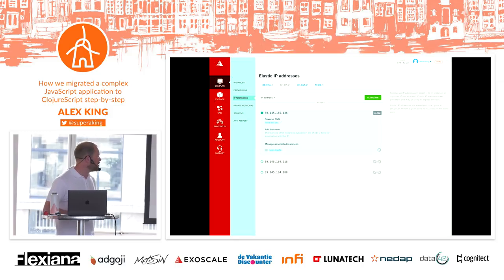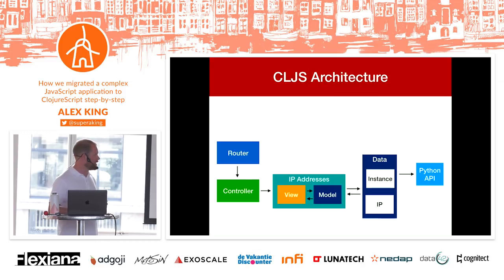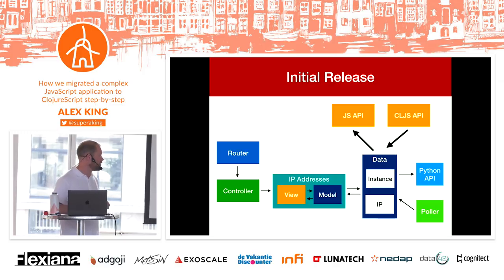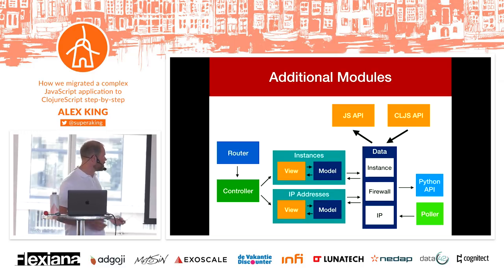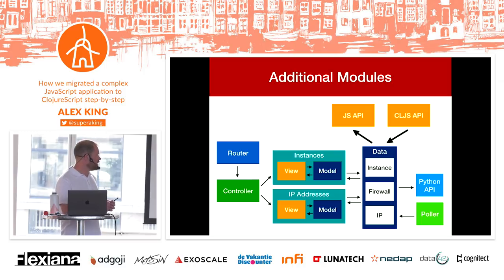We decide to start with IP addresses as our first URL to implement. In terms of architecture: we have a router, a controller listening to the router deciding which view gets rendered, and a data layer representing the API calls the app is making. We also need to do interop for notifications and handle polling. As we add more modules, there will be about 10 or 15 sections — instances, IP addresses, and more entities in the data layer. The idea is that the data layer persists data across screen changes, so shared data isn't loaded every time.